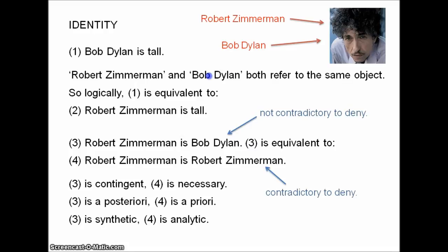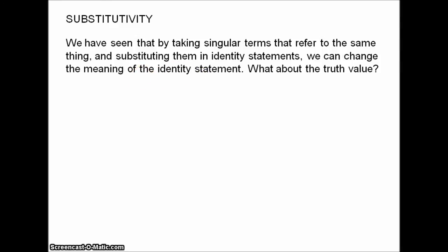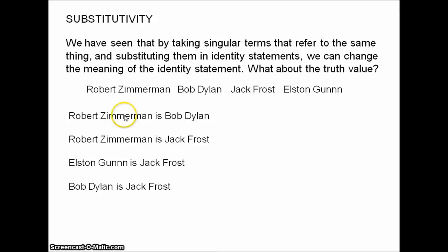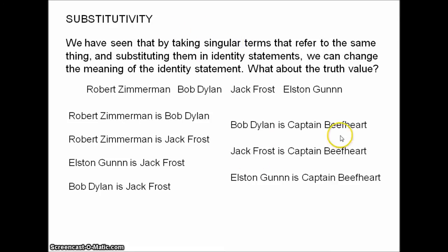The second puzzle is about substitutivity. We have two singular terms that refer to the same thing. We've seen that substituting singular terms that refer to the same thing in identity statements can slightly alter the meaning. But what about the truth value? Well, the truth value doesn't seem to change. These are all pseudonyms used by Bob Dylan. 'Robert Zimmerman is Bob Dylan' — that's true. 'Robert Zimmerman is Jack Frost' — true. 'Elston Gunn is Jack Frost' — true. 'Bob Dylan is Jack Frost' — true. On the other hand, 'Bob Dylan is Captain Beefart' remains false even after substitution. So it seems that when we take identity statements and substitute two singular terms that refer to the same thing, although we might change the meaning in some ways, the truth value remains the same.